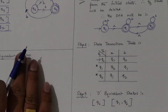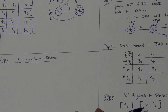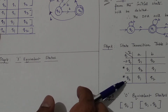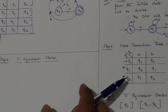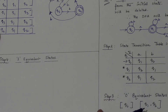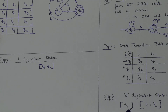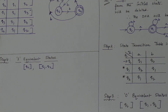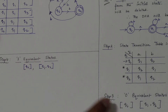Step four: finding one equivalent states. The group {q0} is a single element, so no need to check it. For the group {q1, q2}, checking on input a: q1 goes to q2 and q2 goes to q1 — both are in the same zero equivalent group, so no issue. On input b: q1 goes to q1 and q2 goes to q2 — again the same group. Therefore q1 and q2 remain together. Since we get the same equivalent states as before, we stop here.